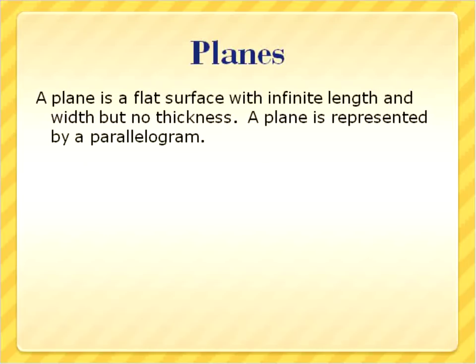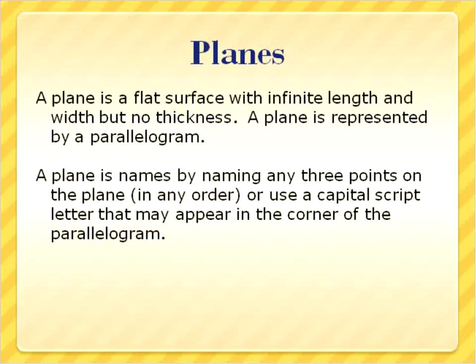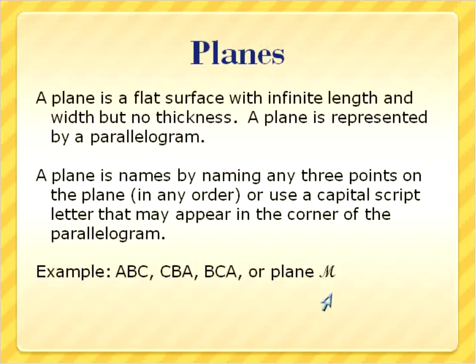The third part is a plane. A plane is a flat surface with infinite length and width but no thickness. It's usually represented using a parallelogram. We name a plane by any three points that are on that plane in any order. So you can use three capital letters or a capital script letter — it kind of looks like cursive. So this would be plane ABC because points A, B, and C are all inside one flat surface. Or point CBA or point BCA — all three are the same, it doesn't matter what order they are. Or you can say that it's plane M.